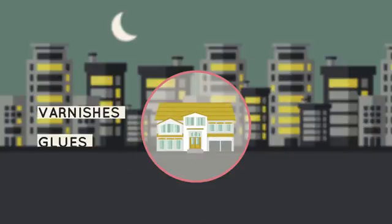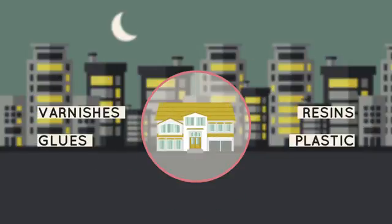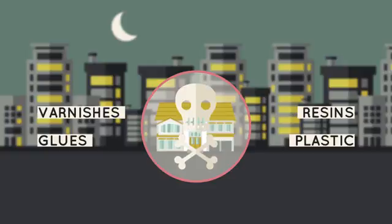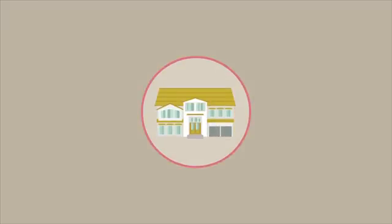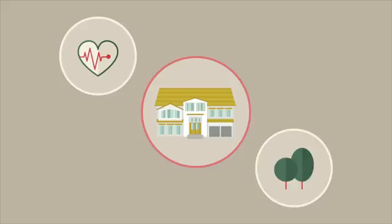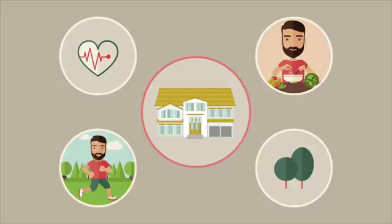Varnishes, glues, resins, plastic and other oil derivatives are materials and substances bad for our health, but present in every dwelling in various forms. Focusing on how to make our home healthier and more natural is as important as eating well or practicing sports. Otherwise, we would be incoherent.